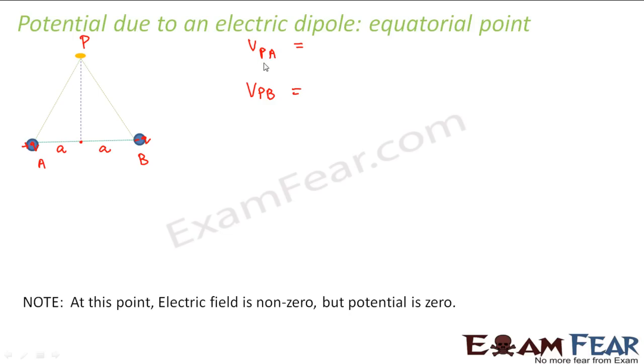So when we calculate the potential at P due to A, this will be equal to k into q divided by the distance. So what is the distance? That is AP. So what is AP? This is a, and we assume that this point P is x distance away from the dipole.